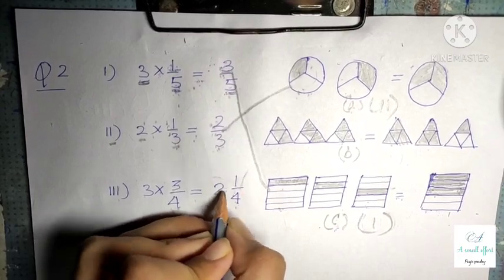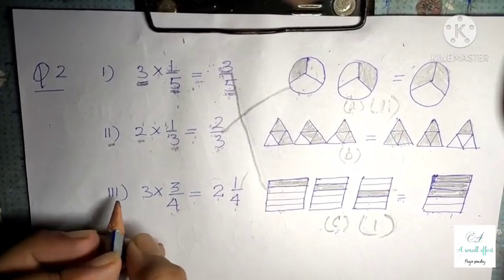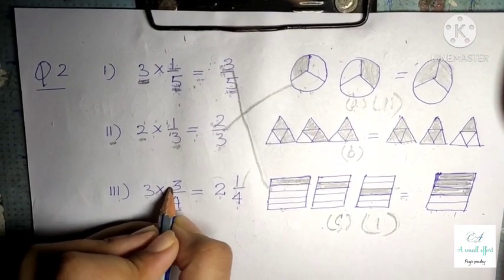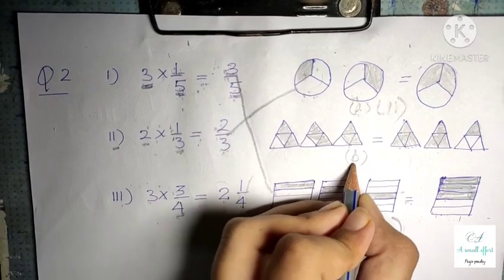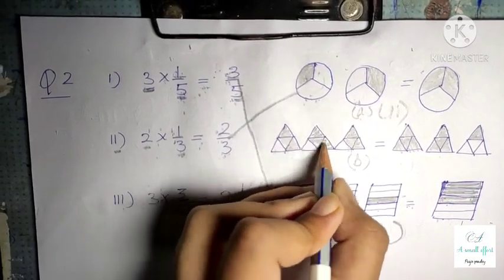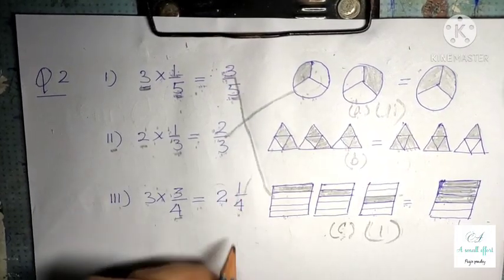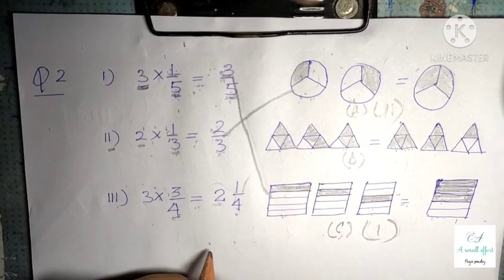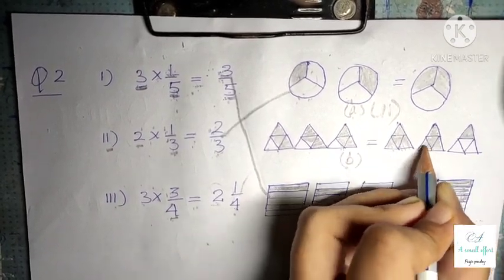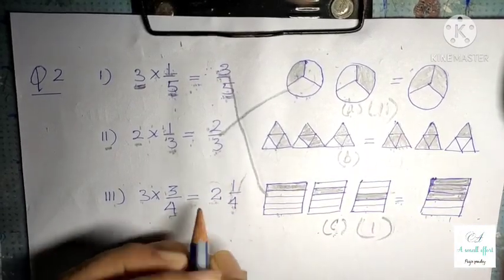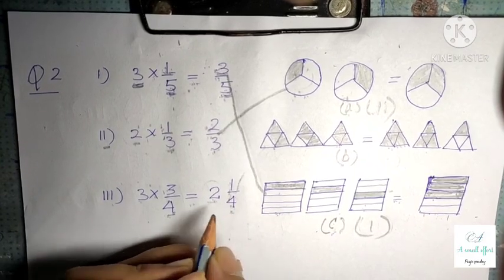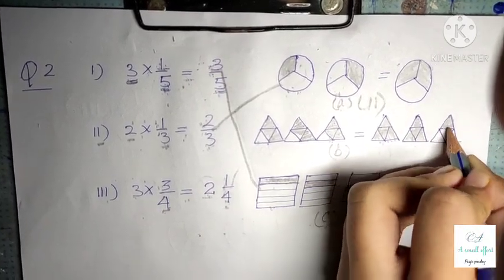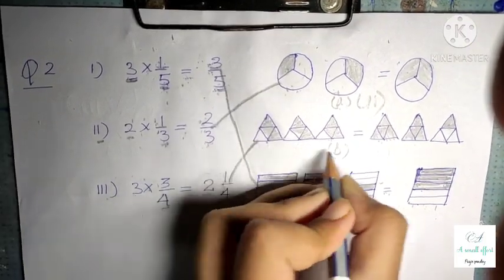Part 3 is 3 × 3/4 = 2 and 1/4. There should be 3 figures, 4 is the denominator so 4 equal parts should be there, and 3 is the numerator so 3 parts should be shaded. In option B, 3 parts are shaded in each figure. The whole number 2 means 2 figures are shaded completely, and 1/4 means 4 equal parts with 1 shaded part — which we can see in option B. So part 3 is matched with option B.